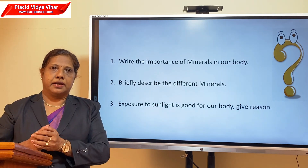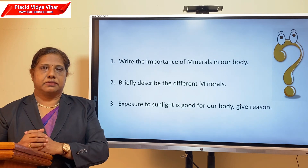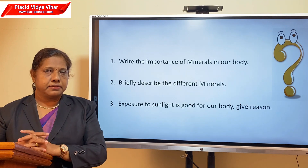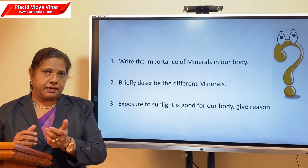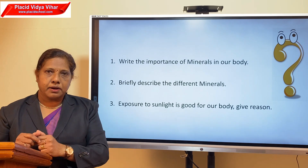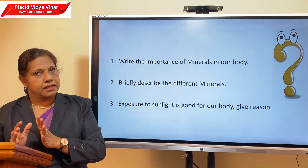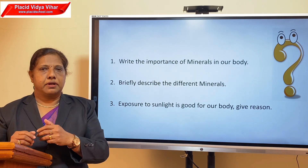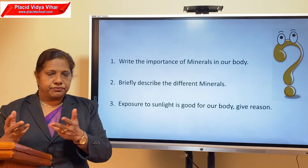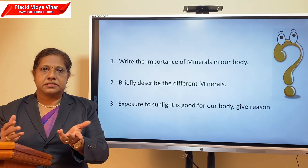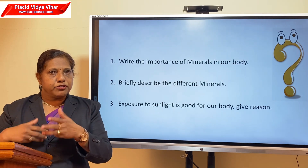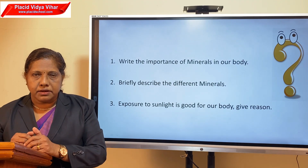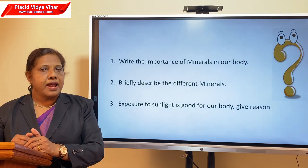Usually one food item contains more than one nutrient, but the amount of one nutrient may be in much larger quantity than others. For example, rice contains a lot of carbohydrates, so we say rice is a carbohydrate-rich source of food. Another example: meat contains fat, proteins, some vitamins, and some minerals, but the amount of fat will be more than other nutrients, so we say meat is a fat-rich source of food.